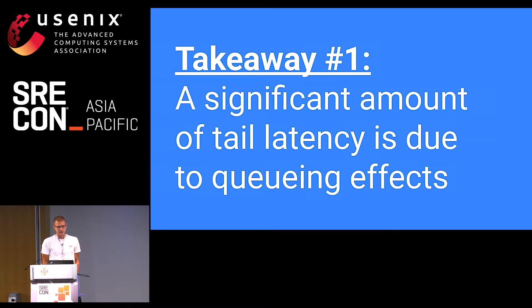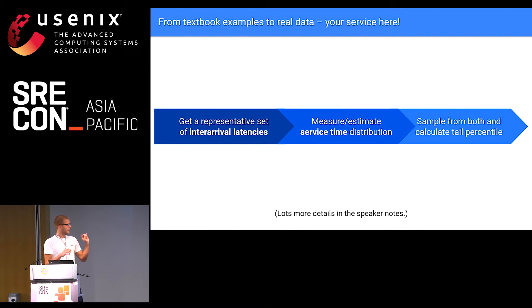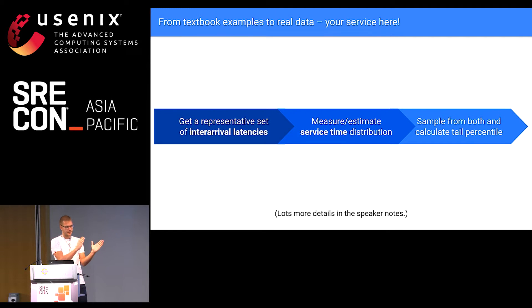The first takeaway is that a significant amount of tail latency is due to queuing effects. You never really know until you measure, but if you haven't measured it, you shouldn't assume it's zero — it'll probably be a significant amount of tail latency. I just sampled from mathematical distributions, but you could do this for your own service. Get a representative set of inter-arrival latencies: for a short amount of time, log the timestamp of every arriving request, sort them in order, compute the delta to the next one. Now you have a distribution of time between requests. Then either measure or estimate the service time — measuring is hard because you need precise per-thread counters which have overheads, but you may find tail latency effects dominate just because of waiting time, not service time.